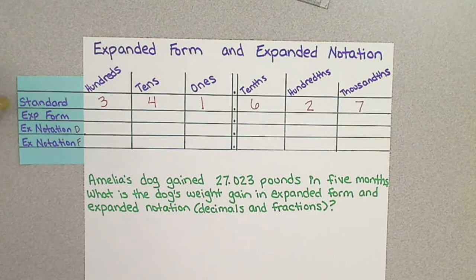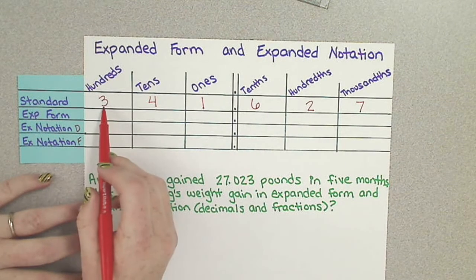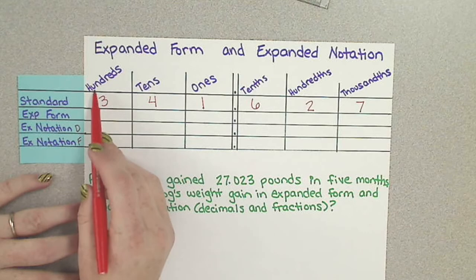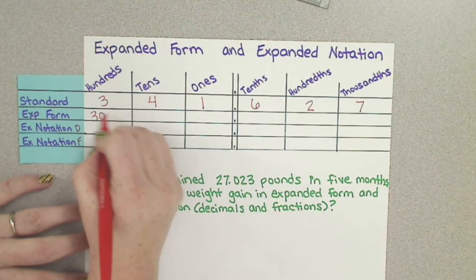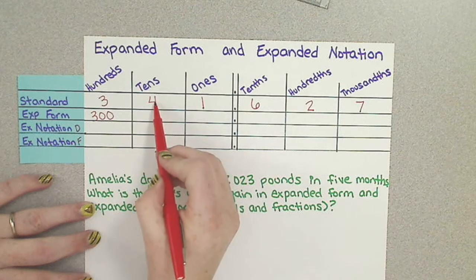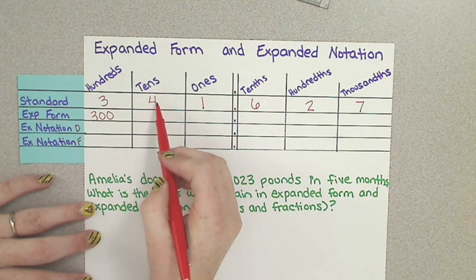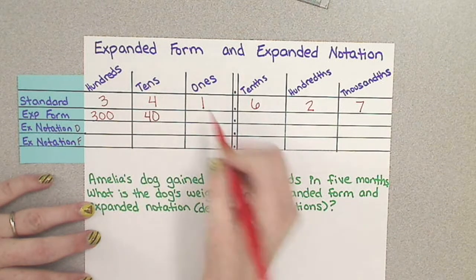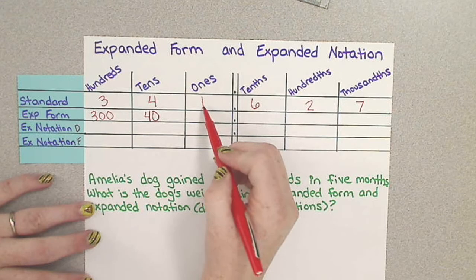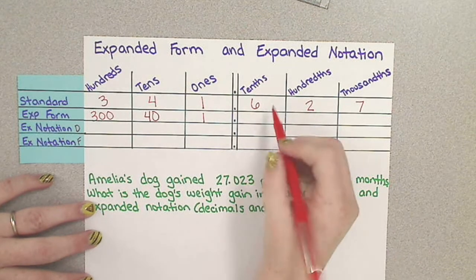So step by step, expanded form. I need to know what the value of this 3 is. Well, I have 300, so 3 times 100 is 300. The value of this 4, it's 4 tens, so 4 times 10 is 40. I have 1 one, 1 times 1 is 1.